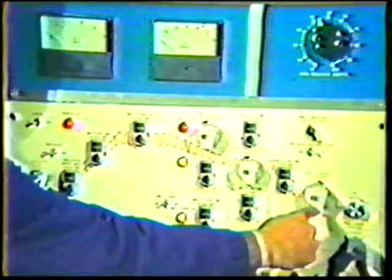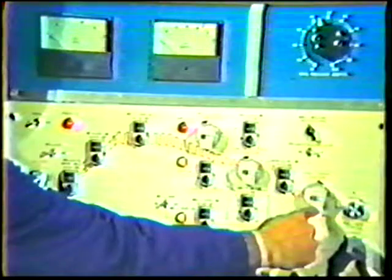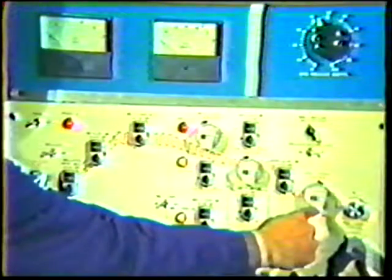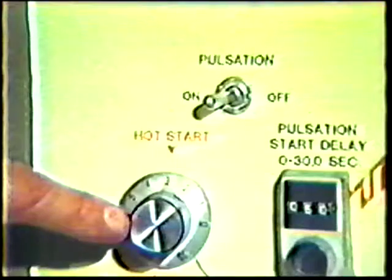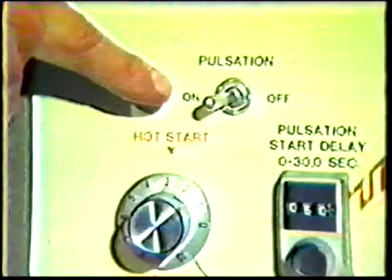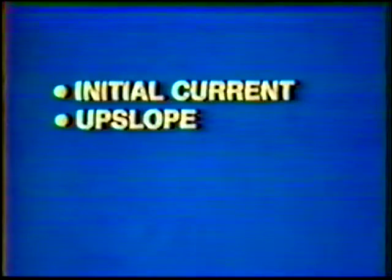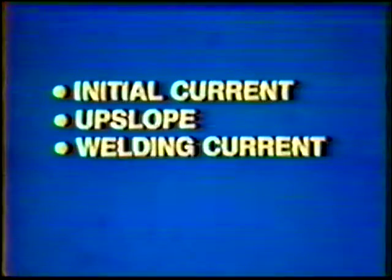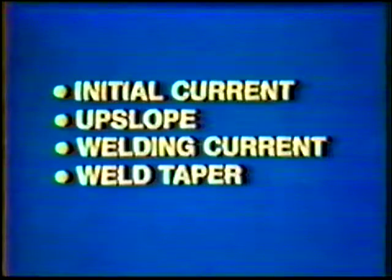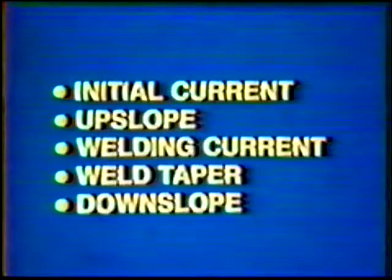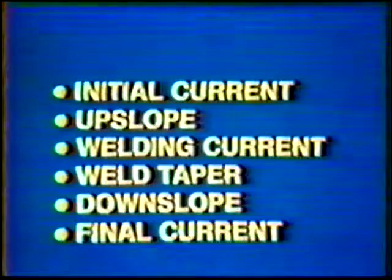Programmers for automatic gas tungsten arc equipment are equipped with a hot start control and usually pulsed weld current. Other types of current controls can include initial current, upslope, welding current, weld taper, downslope, and final current.